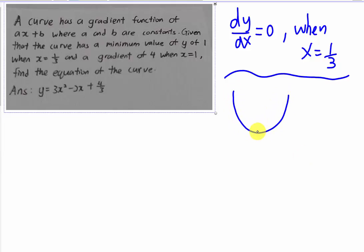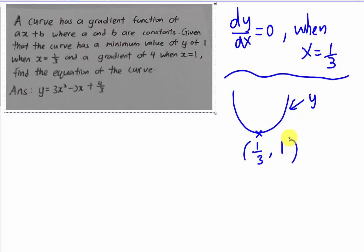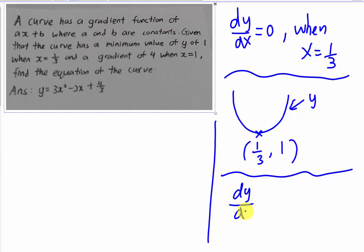This coordinate (1/3, 1) is on the curve, and we are going to use it to find the equation of the curve. We also have a second piece of information: the gradient is 4 when x equals 1, meaning dy/dx equals 4 when x equals 1. This is all the information given, and the question asks us to find the equation of the curve.